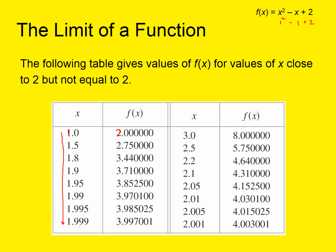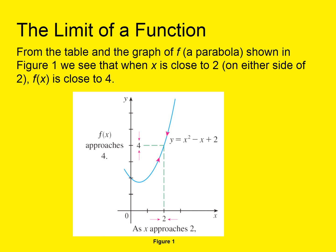It looks like f(x) is going to 4. When x is very close to 2 — x coming from the left, values less than 2 — f(x) appears to be approaching 4, because it's at 3.997001. The same thing is happening as x approaches 2 from the right. The values of f(x) again appear to be approaching 4. On the graph of f, a parabola, we see that when x is close to 2 on either side, f(x) is close to 4.